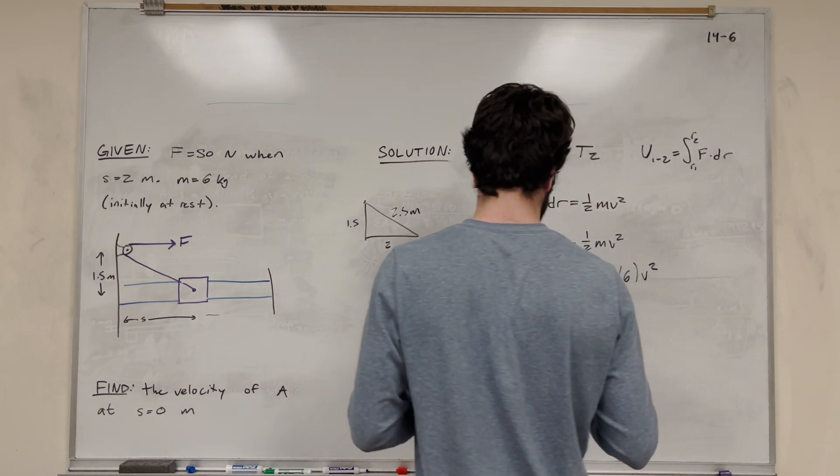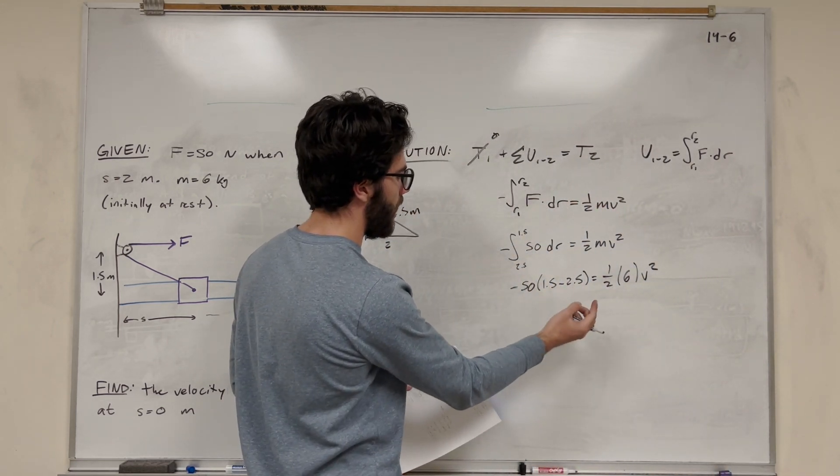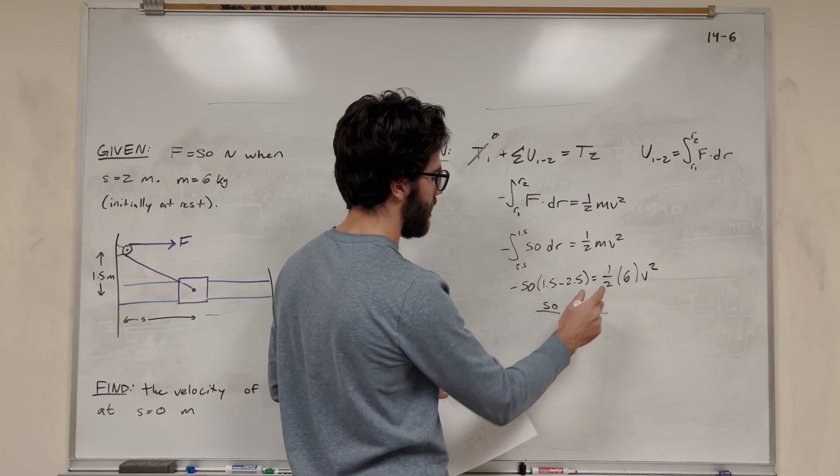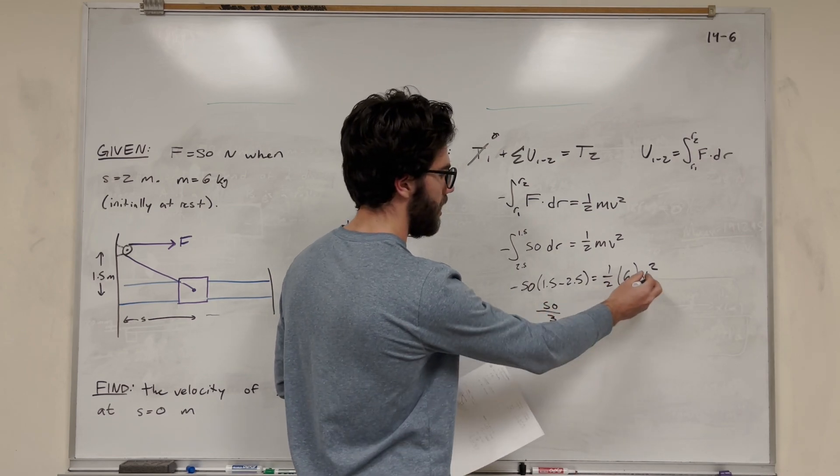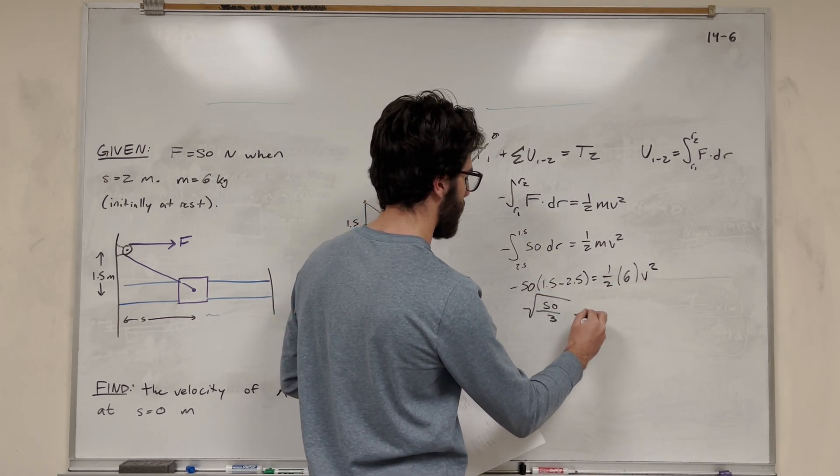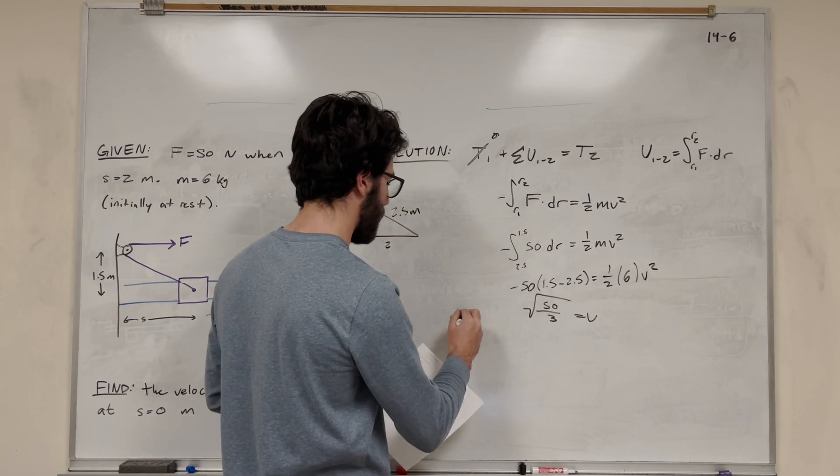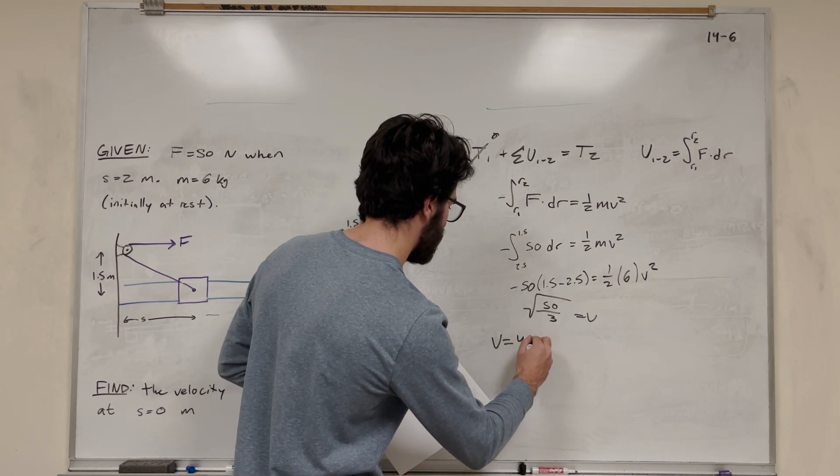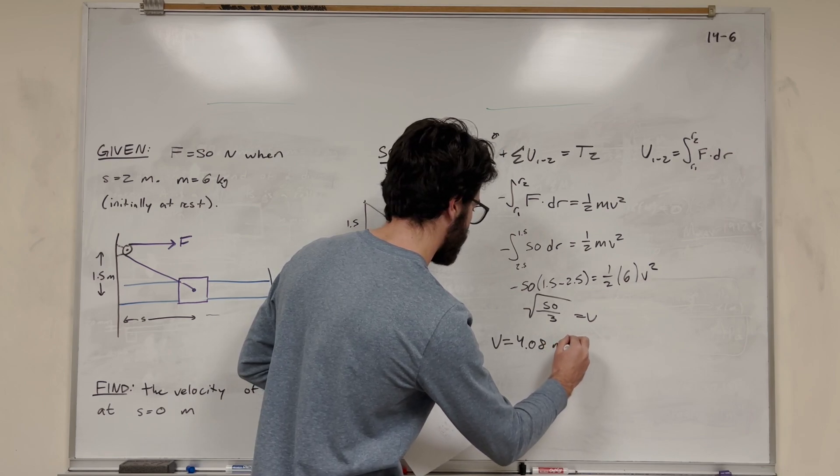So what this is going to become is 50 times 1, and then minus, so we get 50. Then one half of 6 is 3, so we're going to divide by 3. Take the square root to get velocity. And solve for this, you get that velocity is equal to 4.08 meters per second.